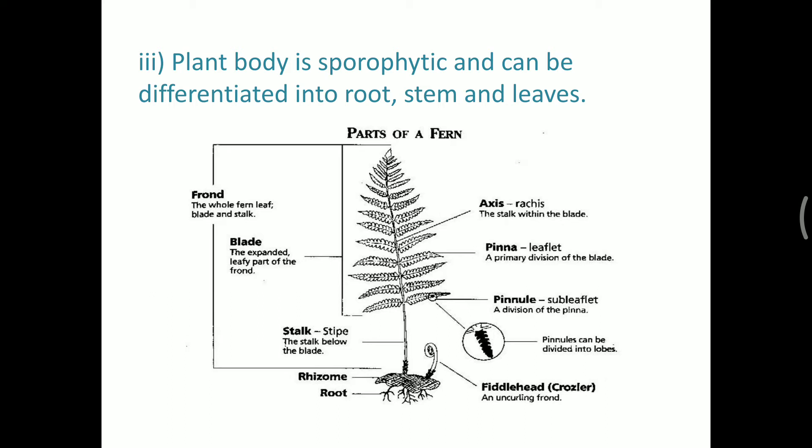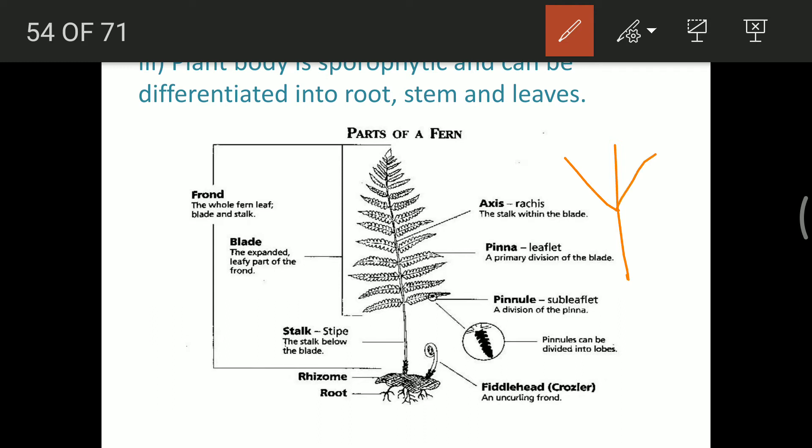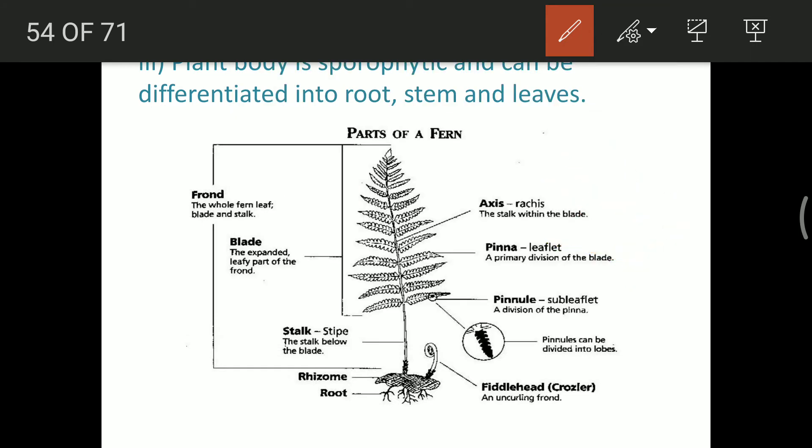The entire plant body is sporophytic, meaning it is diploid, and can be differentiated into root, stem, and leaves. The entire plant body looks like a leaf-like structure called a frond. The blade consists of pinnately arranged leaves — pinnate means leaves arranged opposite to one another. The stalk is the midrib area attaching to the leaflets and rhizome. The rhizome is the root of the fern. Pinna or leaflets — we say leaflets rather than leaves since they are smaller than a leaf, and each has sub-leaflets called pinnules.